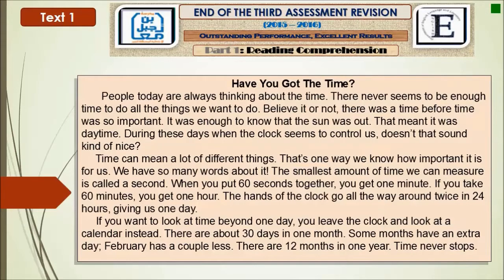The first text talks about time. Have you got the time? People today are all thinking about time. There never seems to be enough time to do all the things we want to do. Believe it or not, there was a time before time was so important. It was enough to know that the sun was out — that meant it was daytime. During these days, when the clock seems to control us, doesn't that sound kind of nice?